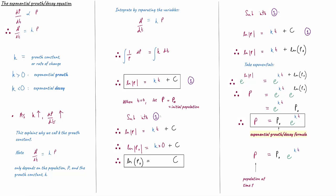Let's analyze the different parts of this formula. P is the size of the population at any time t. P naught is the size of the population when t equals zero — we call that the initial population. e is Euler's number, approximately 2.7. k is the growth constant, a fixed constant number. And t stands for time. This is the exponential growth or decay formula — whenever your rate of change of population is proportional to the current population size, you'll end up with this equation.